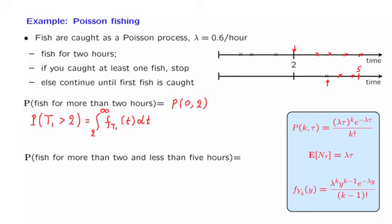With this way of thinking, the fact that you stopped fishing before time five is the event that the number of fish caught — that is, the number of Poisson arrivals — during the interval from two to five is at least equal to one.